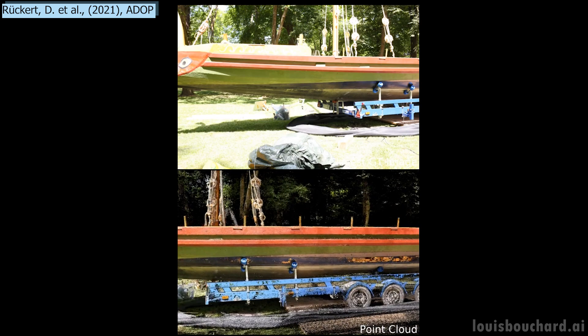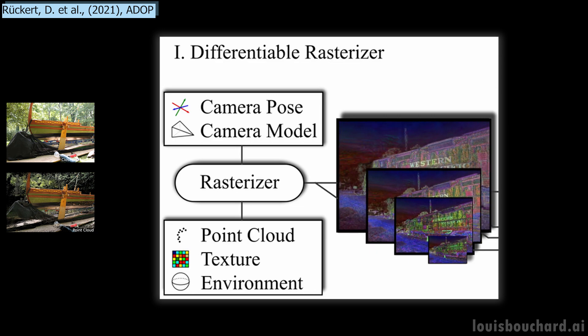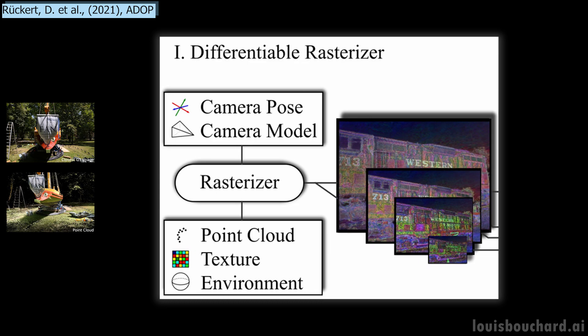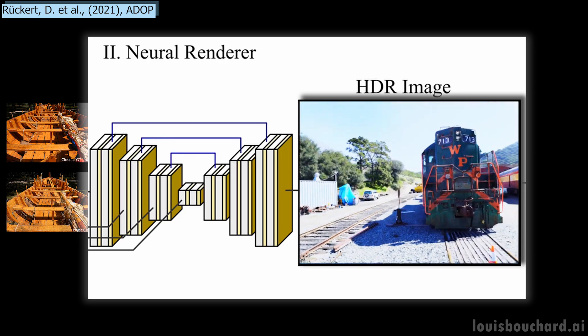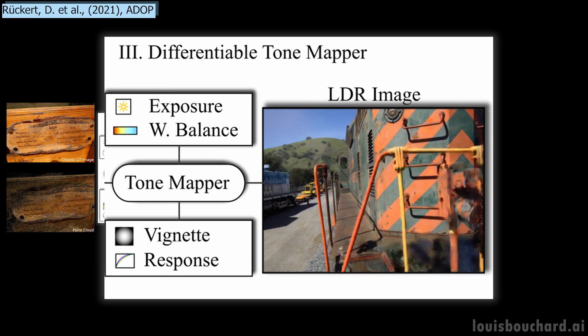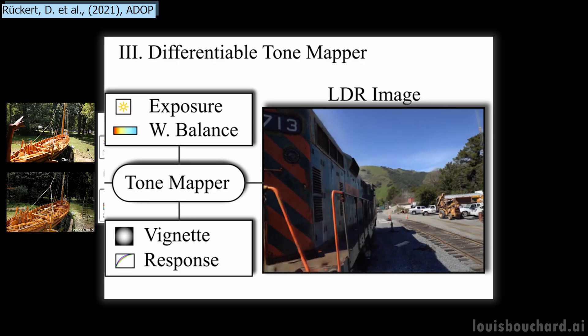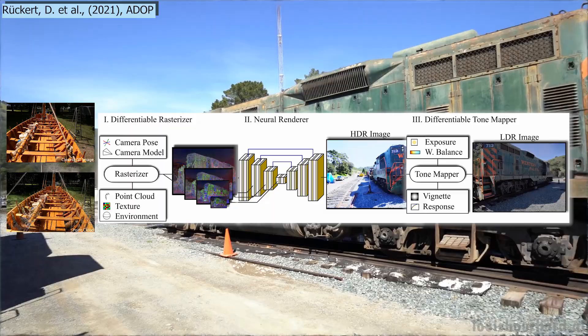There are basically four steps in this algorithm. First, create a point cloud from your images to have a first 3D rendering of the scene. Second, fill in the missing holes of this first rendering as best as possible using the images and camera information, at various image resolutions. Third, use these various resolutions in a neural network to create a high-quality HDR image of the rendering for any viewpoint. Fourth, transform the HDR images into LDR images for better visualization — and we have the amazing-looking video of the scene we saw at the beginning.